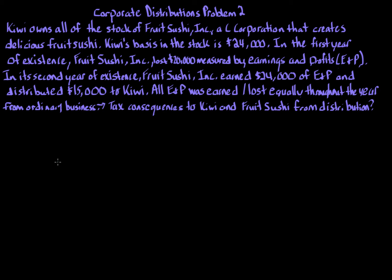In this video we'll continue our discussion of corporate distributions and look at problem number two. If you have yet to watch problem one, please stop and watch it first because this problem series is meant to be a progressive structure where concepts are learned through problems one to the end. Note that while the fact pattern might look similar to the previous problem, every problem does have some type of variant in the fact pattern, so please be careful.